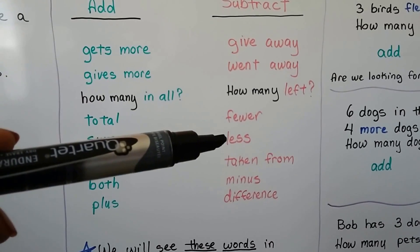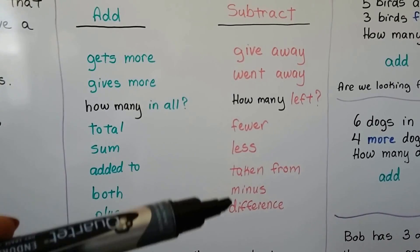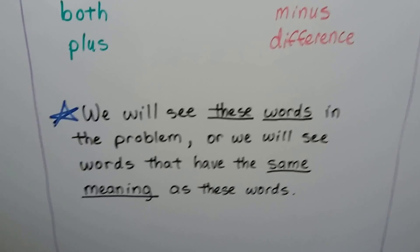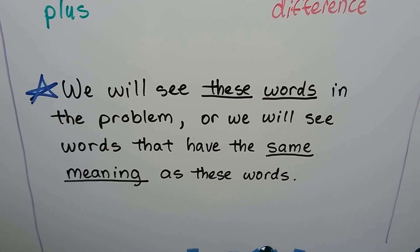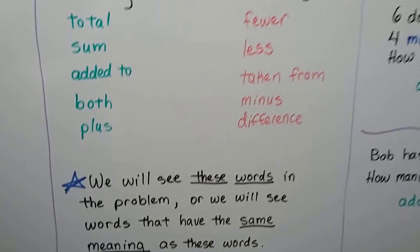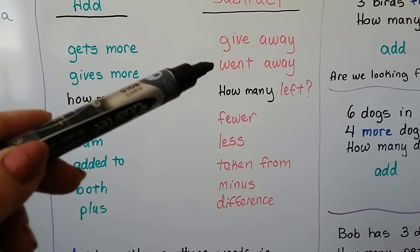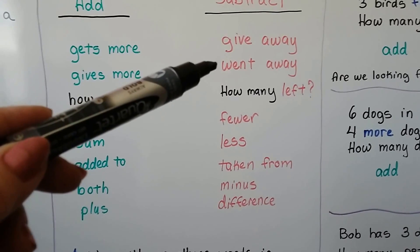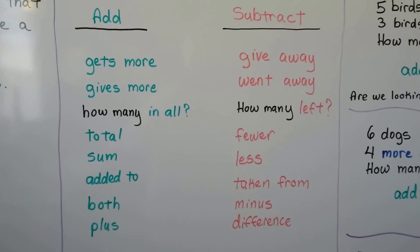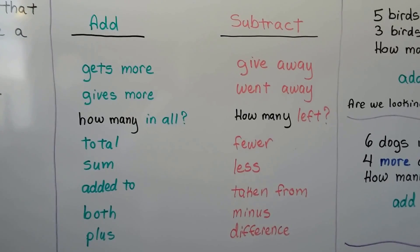For subtraction, we'll see words like 'give away,' 'went away,' 'how many left,' 'fewer,' 'less,' 'taken from,' 'minus,' and 'difference' — difference is the answer for subtraction. We will see these words in the problem, or words with the same meaning. If we saw 'flew away,' 'ran away,' or 'jumped away,' we know it means 'went away.'